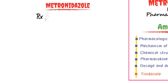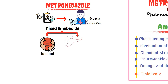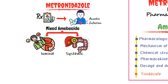Metronidazole is the drug of choice for treating amoebic infections. It is a mixed amoebicide, meaning it kills amoebas causing luminal amoebiasis as well as systemic amoebiasis. However, it is generally not used for asymptomatic patients with luminal amoebiasis who are releasing cysts — luminal amoebicides are used for those cases. Instead, metronidazole is widely used for invasive and extra-intestinal amoebiasis, mostly in combination with a luminal amoebicide.